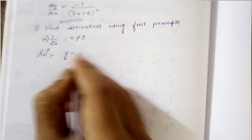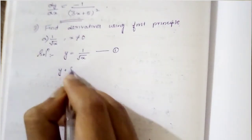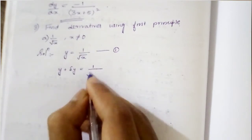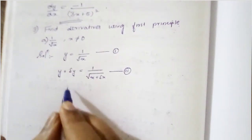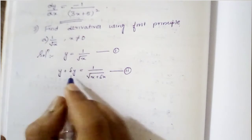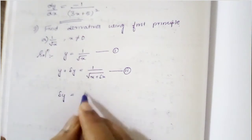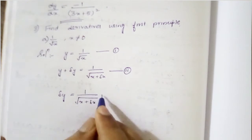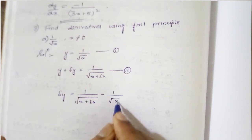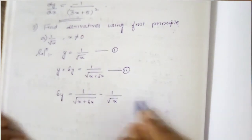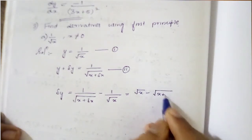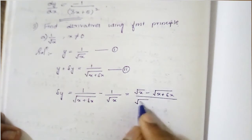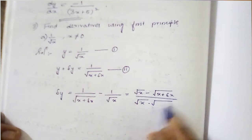The first step is to write it as y equals 1 by root x — this is our first equation. And y plus del y is equal to 1 by root of x plus del x — this is our second equation. Subtracting equation 1 from equation 2, we get del y equals 1 by root(x + del x) minus 1 by root x, which equals root x minus root(x + del x) all over root x into root(x + del x).